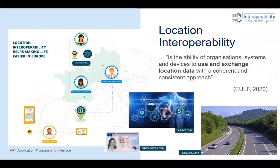In module one, you have already seen this interesting example of a citizen, a person that wants to move from one country to the other. Where maybe in the past, this person had to connect to public authorities in the origin country — for example, Germany — and moving to France required them to contact public services and administrations in France, and also private sector bodies like an insurance company. So it was a complex setting to do something as simple as moving from one country to the other.